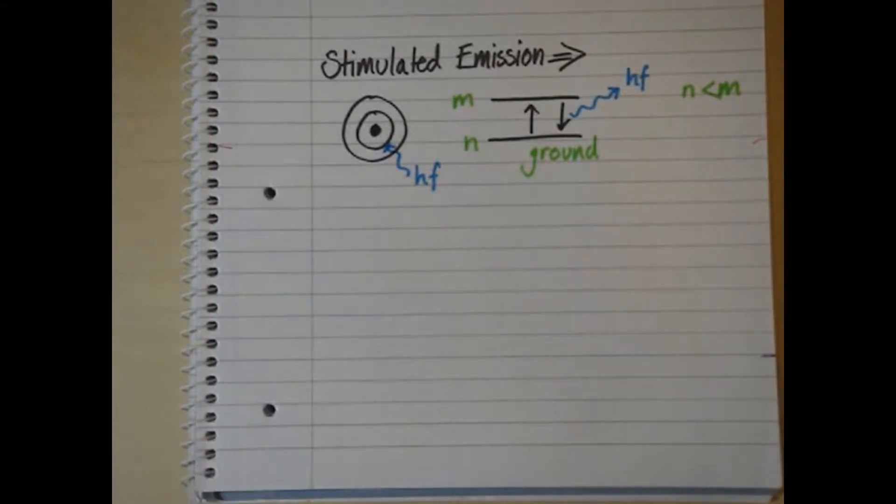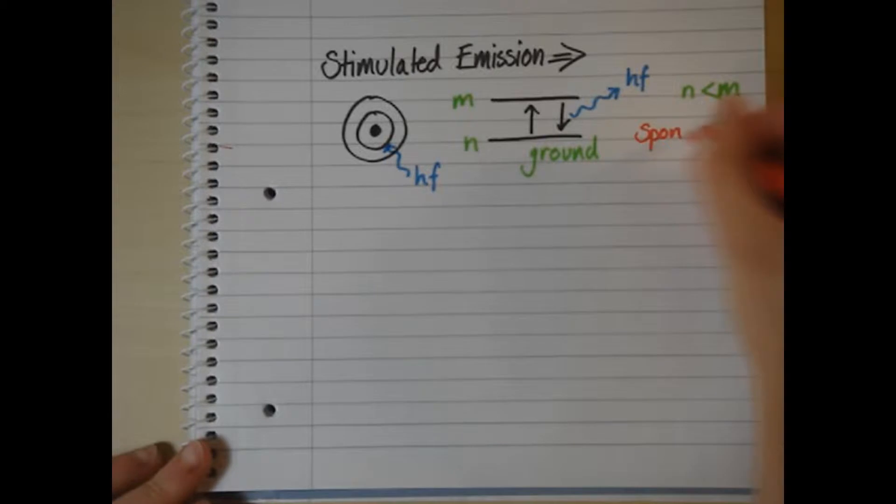Energy is always conserved, so as the electron jumps down, a photon is emitted of the same energy as the difference between the two energy levels. This is known as spontaneous emission.